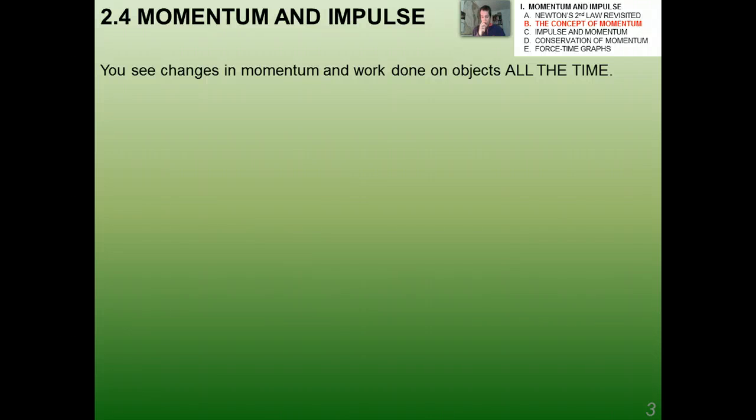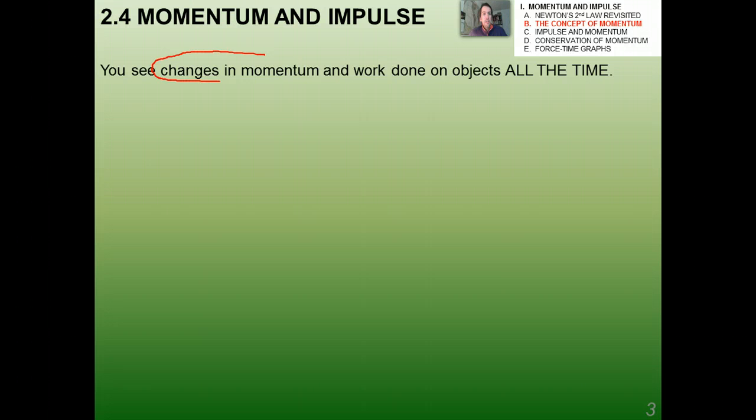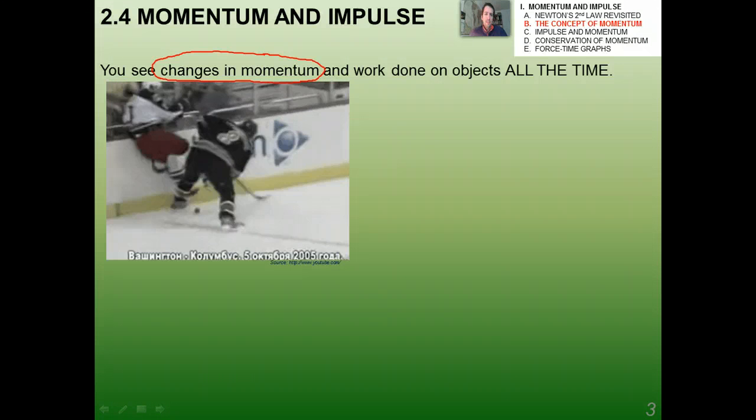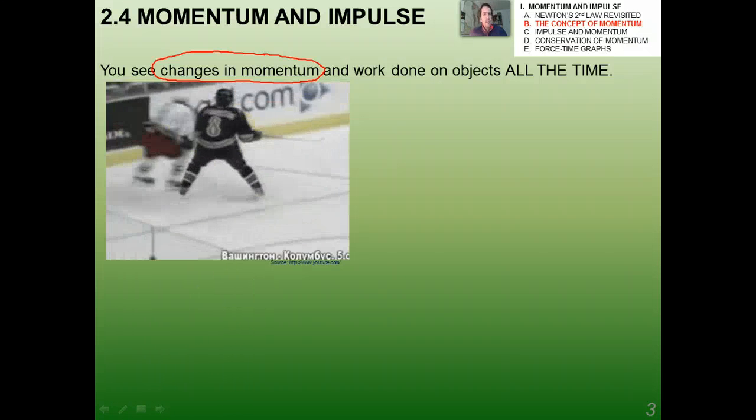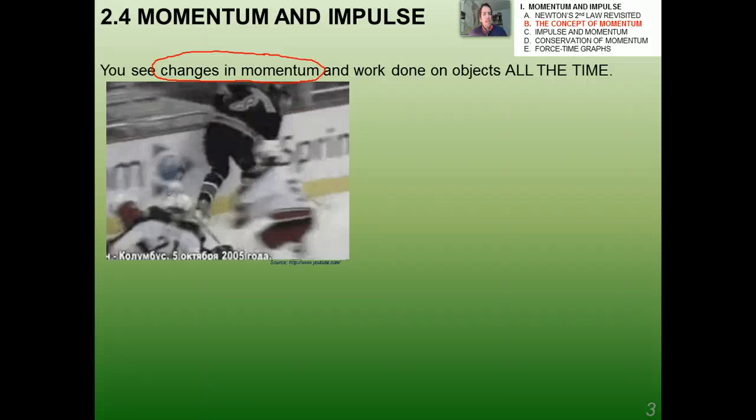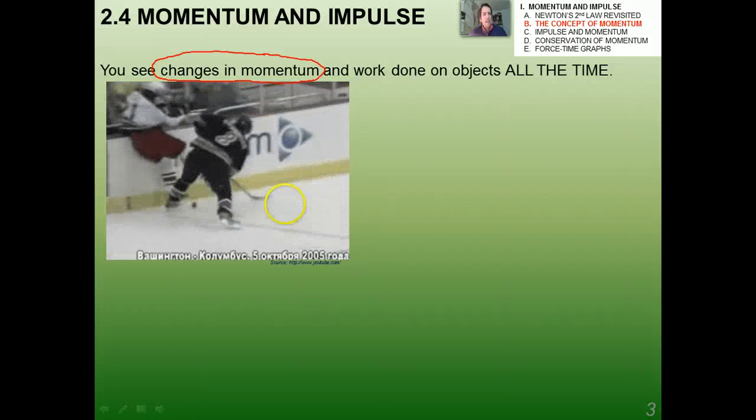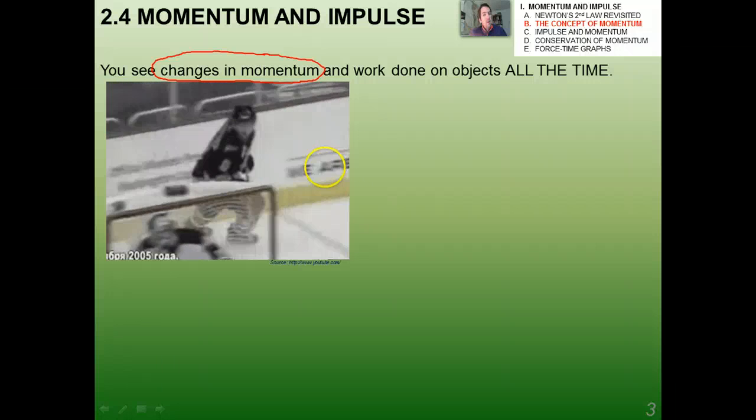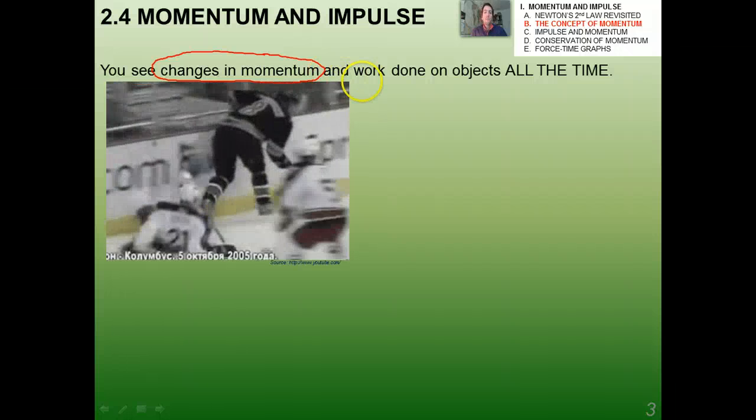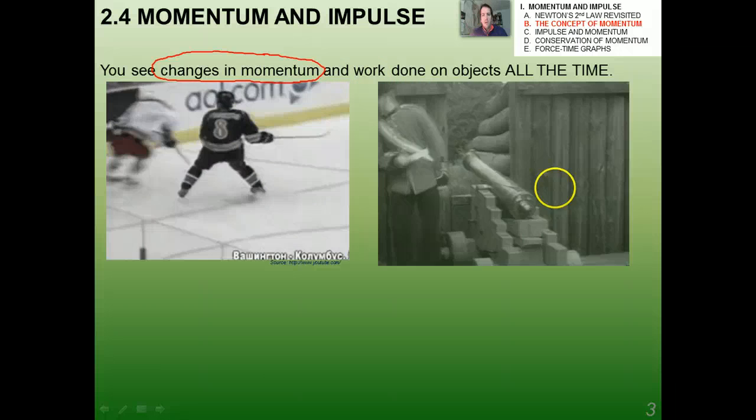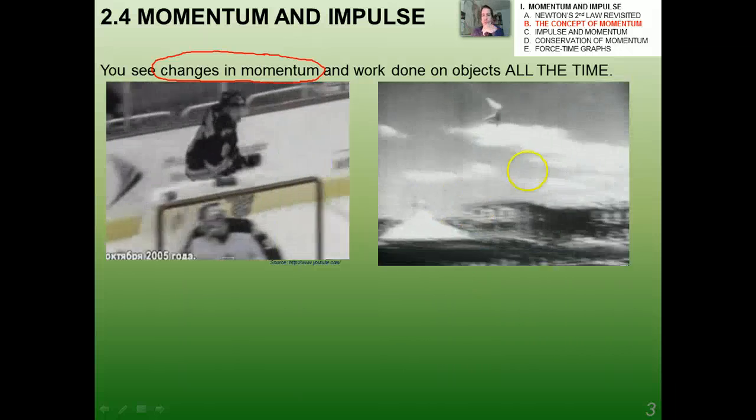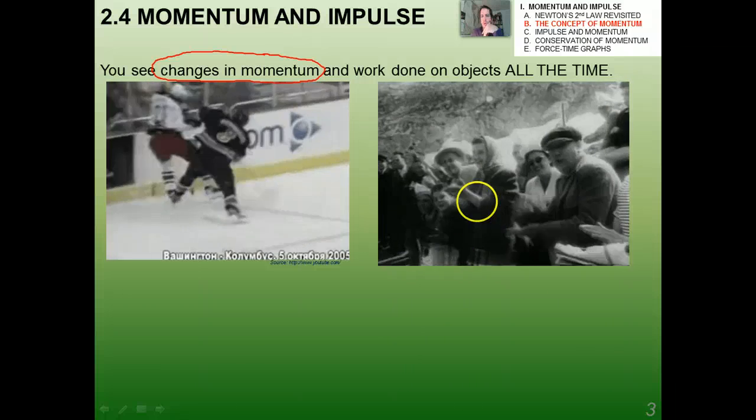Things orbiting, like the space shuttle orbiting around the Earth, one speck of dust or one tiny little rock can actually shatter the window and do very great damage on the space shuttle. In either case, the product of mass times velocity is momentum, and if either of these two numbers is really big, even if the other is small, you can have a very large momentum. You see change in momentum and work done on objects all the time. It's really the change in momentum that's important. It's not so much momentum itself, but the change in momentum, because the time rate of change of momentum is the force.